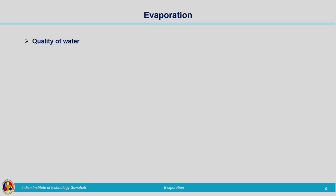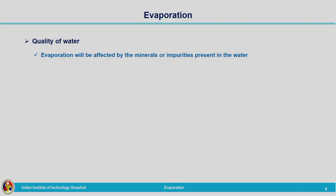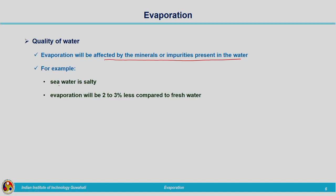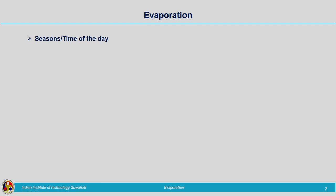The next factor is quality of water. Consider pure fresh water versus saline water — because of impurities present in the water, the rate at which water is converted into vapor is reduced. Evaporation is affected by minerals or impurities present in the water. In the case of sea water, which is salty, evaporation is 2 to 3 percent less compared to fresh water.